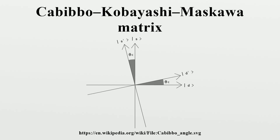For the case N=2, there is only one parameter, which is a mixing angle between two generations of quarks. Historically, this was the first version of the CKM matrix when only two generations were known; it is called the Cabibbo angle after its inventor Nicola Cabibbo. For the standard model case of N=3, there are three mixing angles and one CP-violating complex phase.